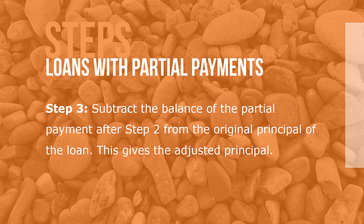Step 3: Subtract the balance of the partial payment after Step 2 from the original principal of the loan. This gives the adjusted principal.